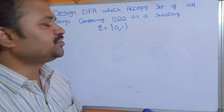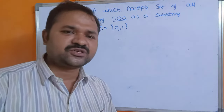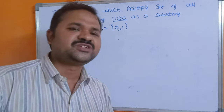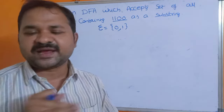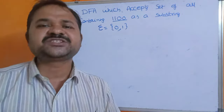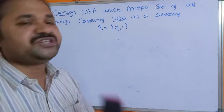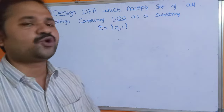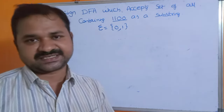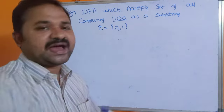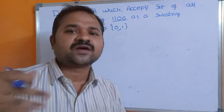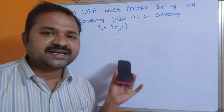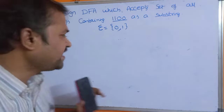Before 1100, we can have any number of 0s and 1s. After 1100, we can have any number of 0s and 1s. We should not bother about that, but the string should contain 1100 as a substring. Here, 1100 contains 4 characters, so we require 4 plus 1, that is 5 states. Let us construct a DFA with 5 states.